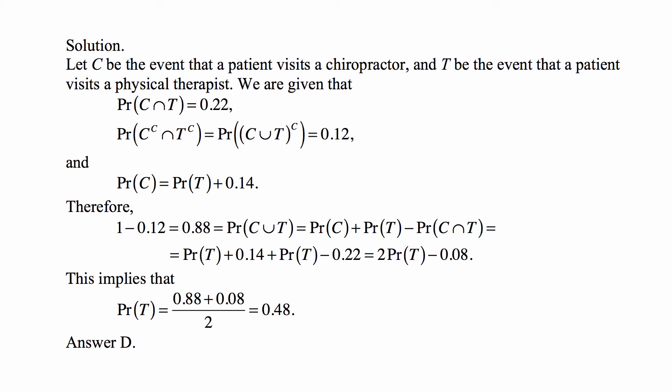Take a look at this probability of the intersection of complements. As I said, it's the same as the probability of the complement of the union. It's 0.12. That means that the probability of the union is 1 minus that, or 0.88.